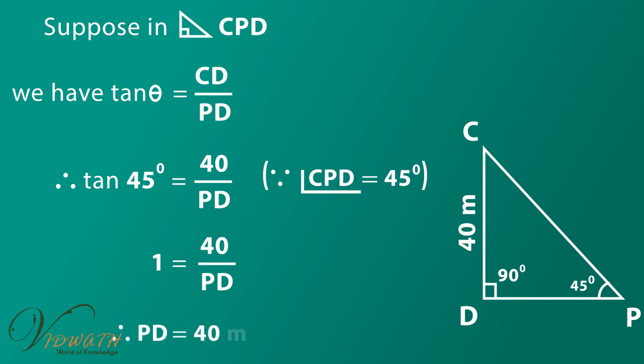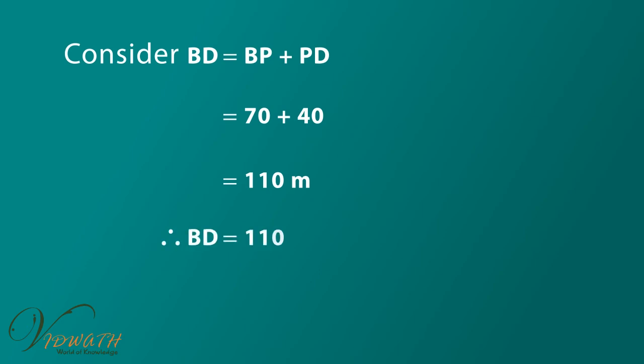Consider BD is equal to BP plus PD is equal to 70 plus 40 is equal to 110 meter. Therefore BD is equal to 110 meter. Hence the distance between the windmills is 110 meters.